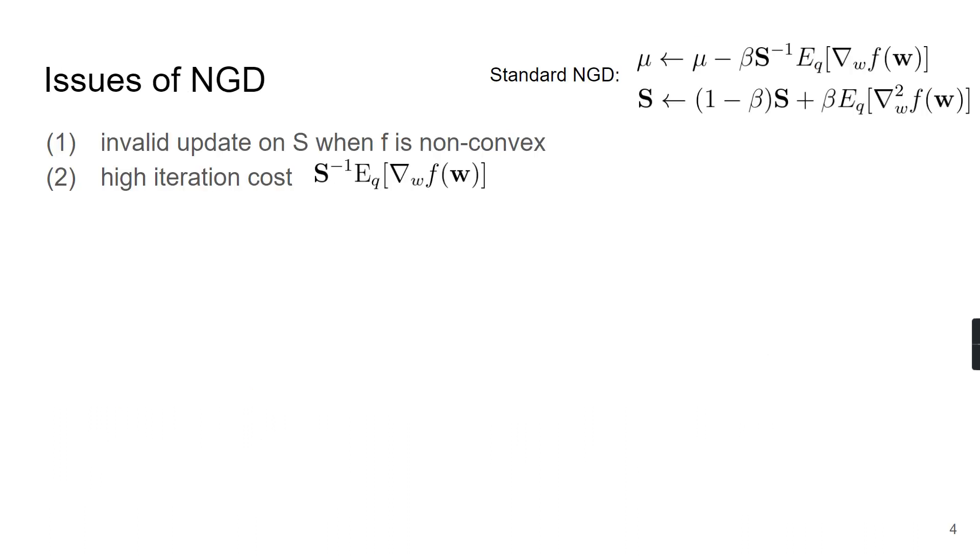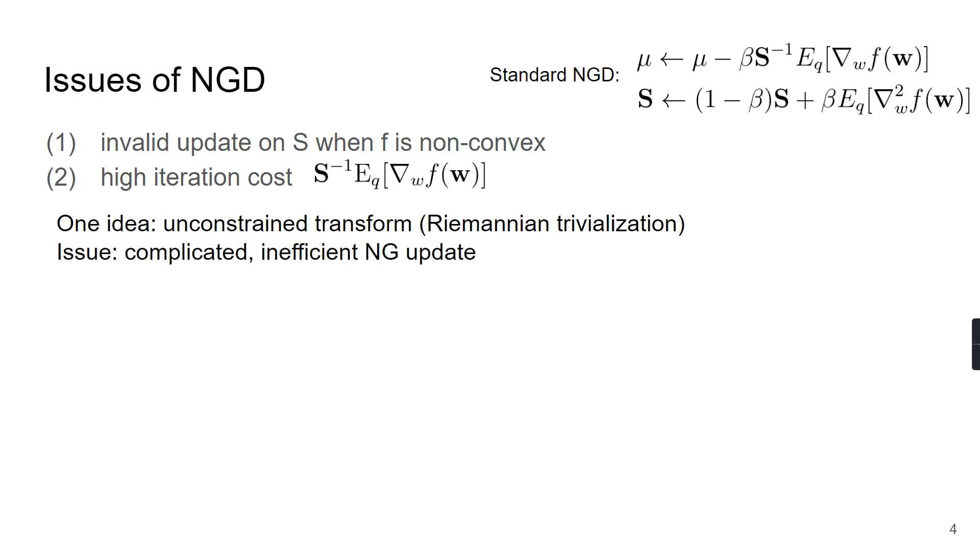And like Newton's method, we can see that standard natural gradient update has several issues. First of all, the updates on S can be invalid if f is non-convex. Secondly, we have a high iteration cost due to the inverse of the precision matrix. For now, let's consider the first issue. One idea is to use an unconstrained transform on S. However, this idea often leads to a complicated natural gradient update, and it is also unclear how to obtain a Newton-like update from it.